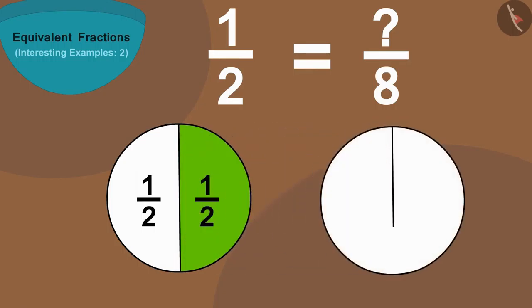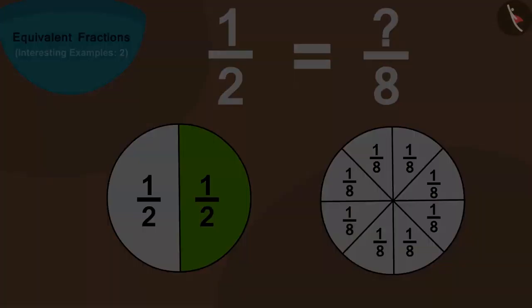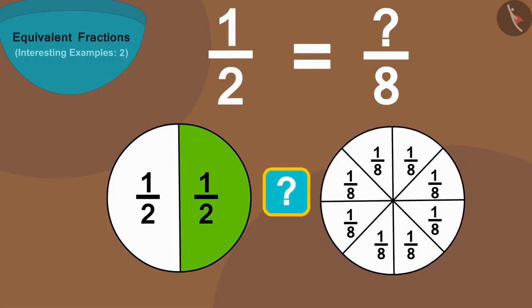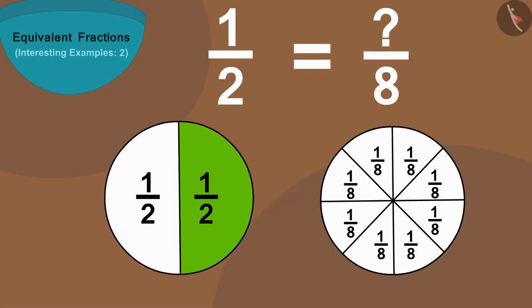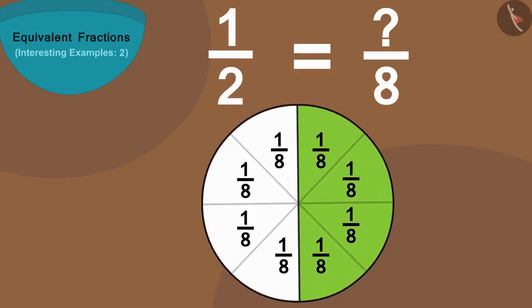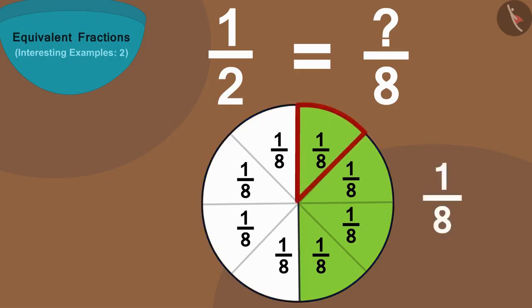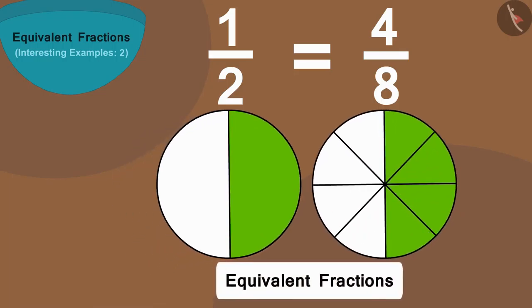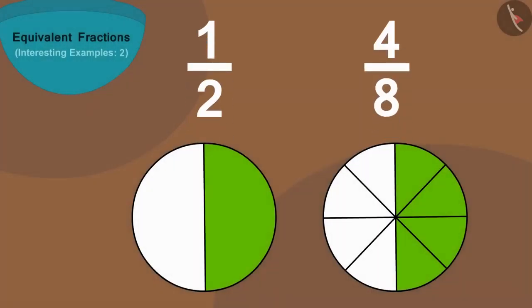Now in this fraction, the number eight shows how many parts of something are made. We can make a similar circle and divide it into eight equal parts. Now we have to find out how many of these eight parts we should take so that it is equal to half of the first circle. If we put these on top of each other, we can see that eight parts of this circle are equal to two parts of the first circle, and four parts of this circle is equal to one colored part of the first circle. Therefore we color four parts, giving us the numeral four above our equivalent fraction. In this way, one half is equal to four by eight.